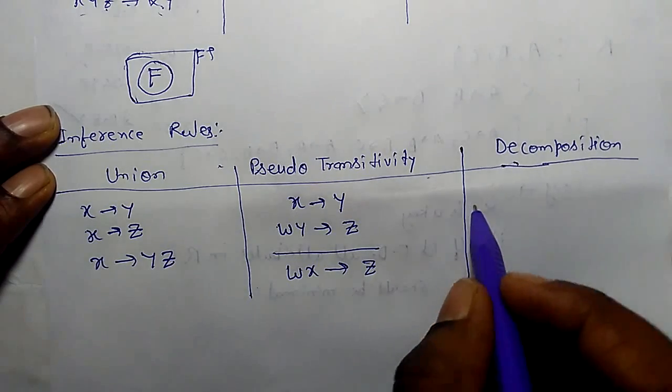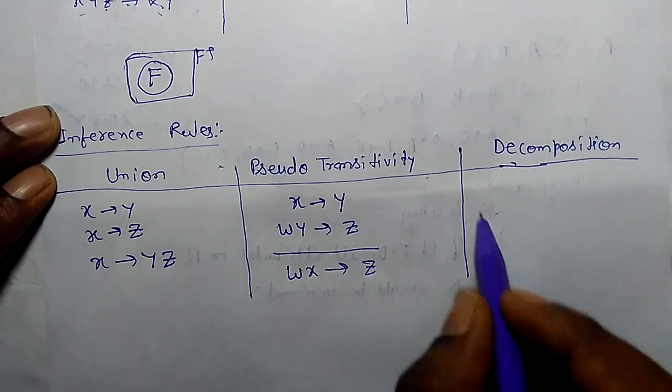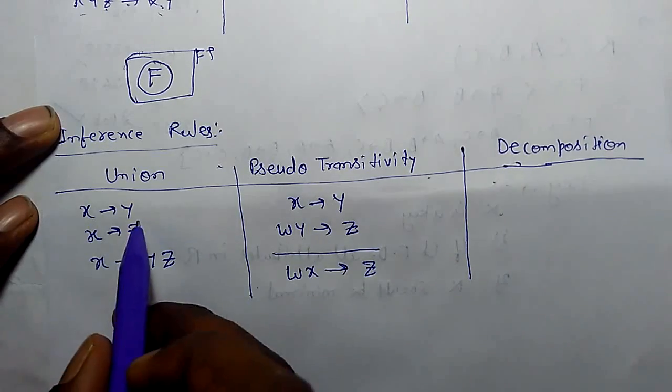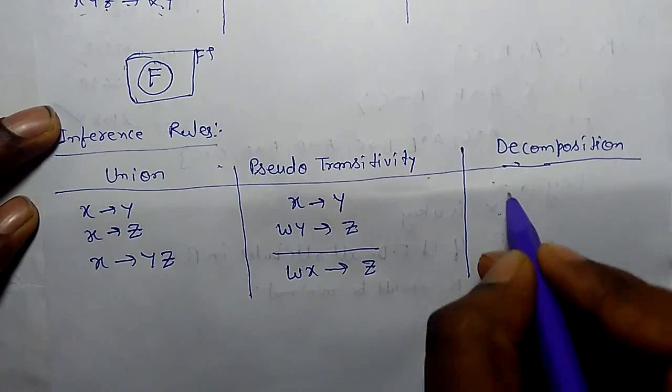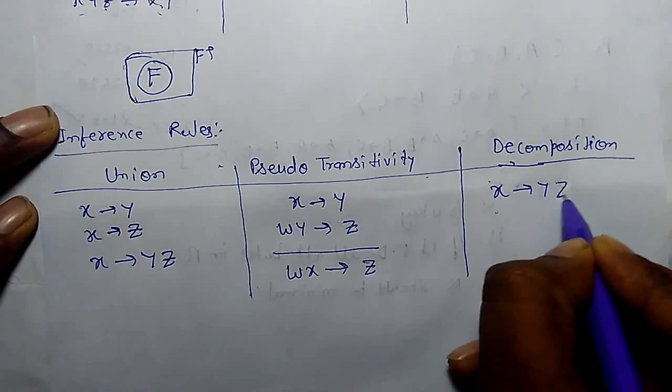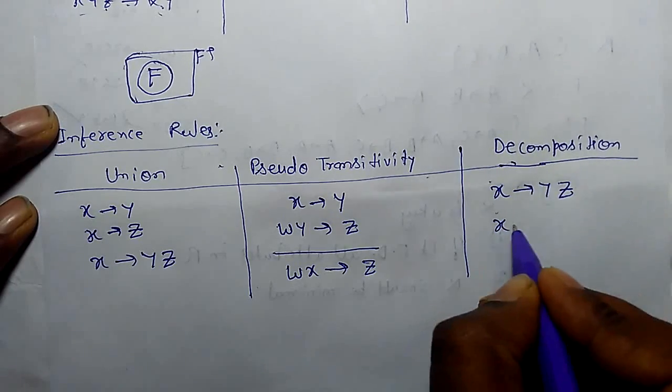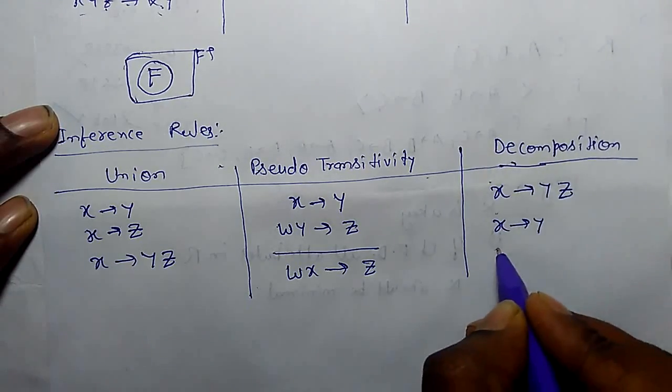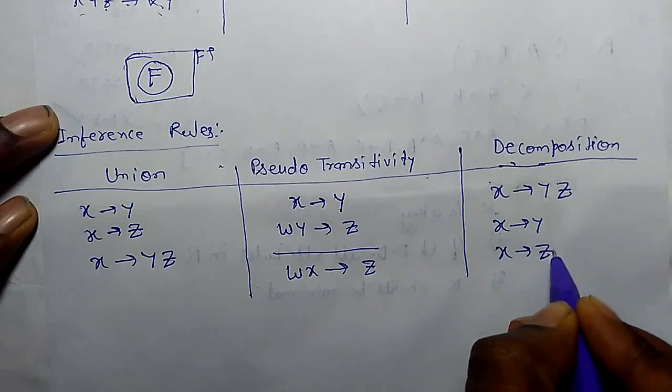And third is decomposition rule. It is just opposite of union rule. If x functionally determines y, z, we can say x functionally determines y and x functionally determines z.